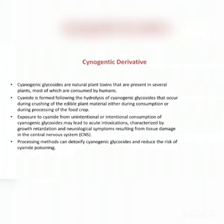Cyanogenic glycosides are natural plant toxins present in several plants, most of which are consumed by humans. Cyanide is formed following hydrolysis of cyanogenic glycosides that occurs during crushing of edible plant material, either during consumption or food processing. Exposure to cyanide from intentional or unintentional consumption may lead to acute intoxication characterized by growth retardation and neurological symptoms resulting from tissue damage in the central nervous system. Processing methods can detoxify cyanogenic glycosides and reduce the risk of cyanide poisoning.